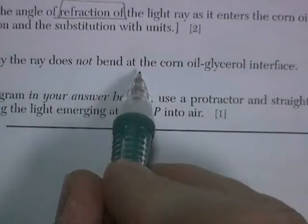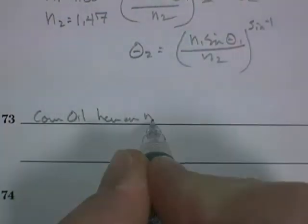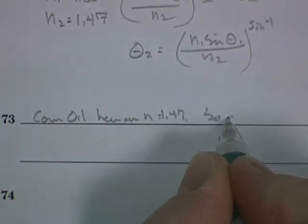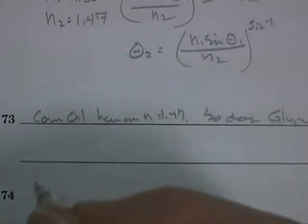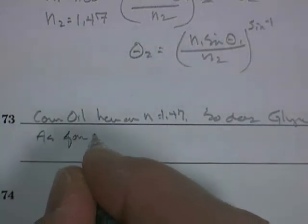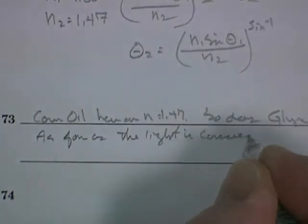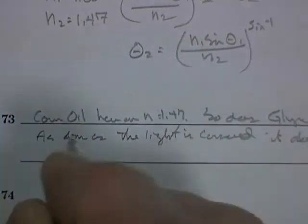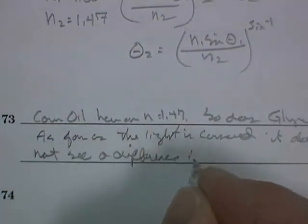Question 73, explain why the ray does not bend at the corn oil-glycerol interface. Well, remember we looked up glycerol and it was 1.47? So corn oil has an N equal to 1.47, so does glycerol. So, as far as the light is concerned, it does not see a difference. Therefore, no bending.